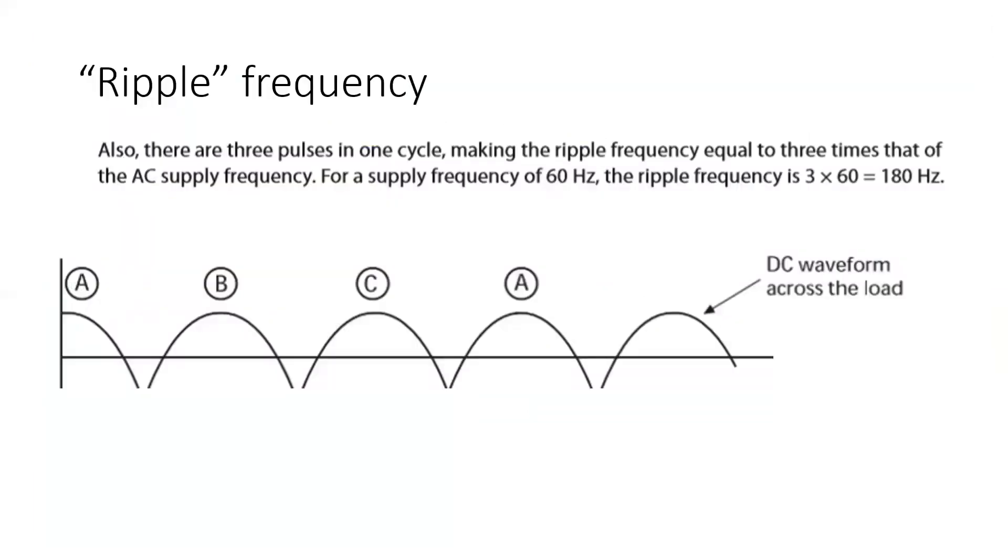The amount of bump that we get is referred to as the ripple frequency and the ripple frequency can be calculated by taking the number of diodes in this situation and multiplying it by the supply frequency which would be 60. So 3 times 60 would equal 180 hertz ripple frequency on the DC output.